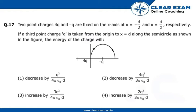Hello everyone. Let's move to our next question. The question states that two point charges 4Q and -Q are fixed on the x-axis at distance x equals -D/2 and x equals D/2 respectively.